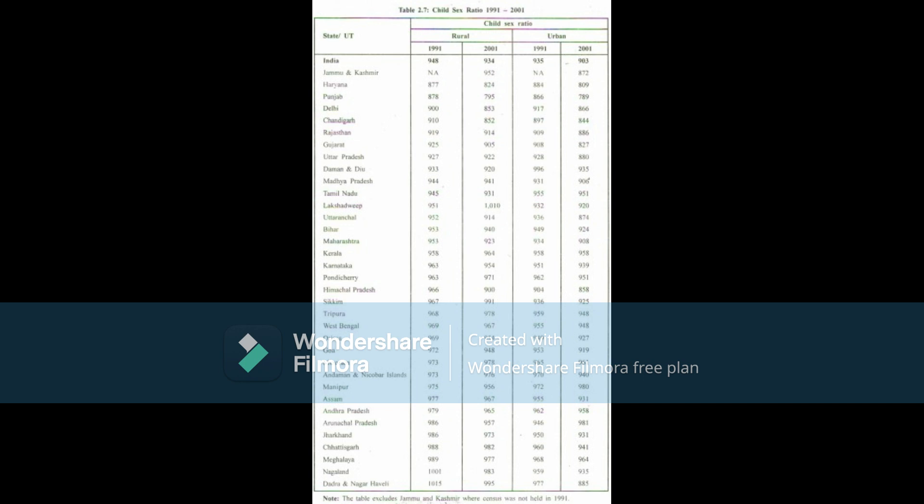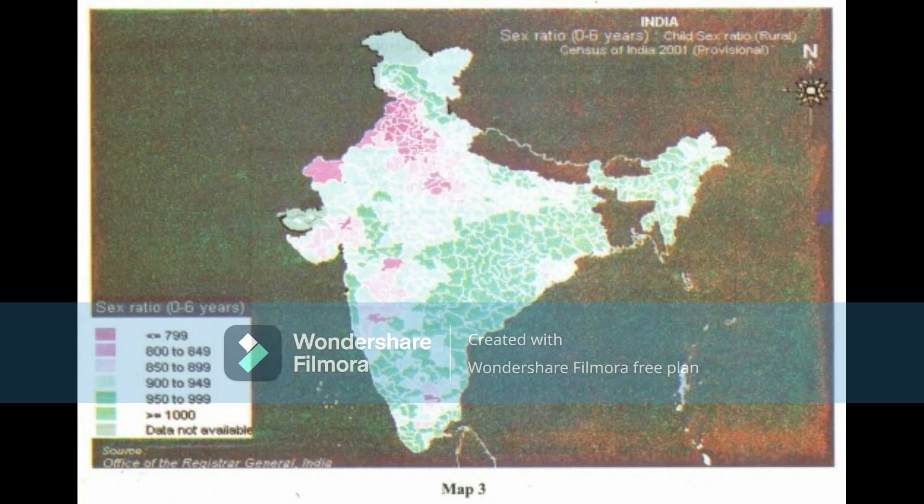Check Your Progress 2. 1. The decreasing sex ratio can be attributed to several factors. In what way do you think the data on sex ratio at birth help us in judging the situation better? 2. Name three states which have low sex ratio and state the reasons. 3. What does the decline in the child sex ratio indicate?